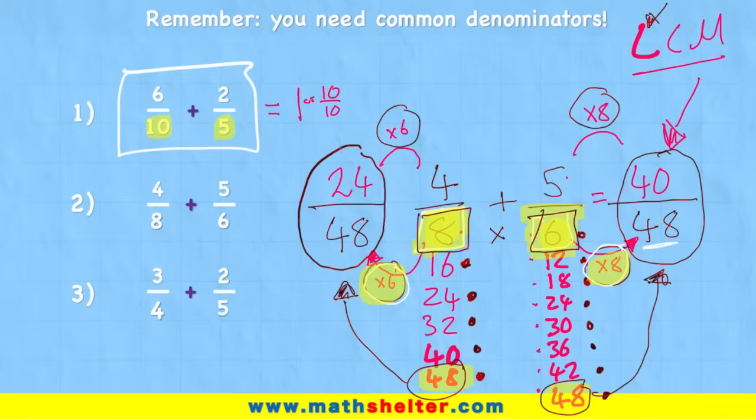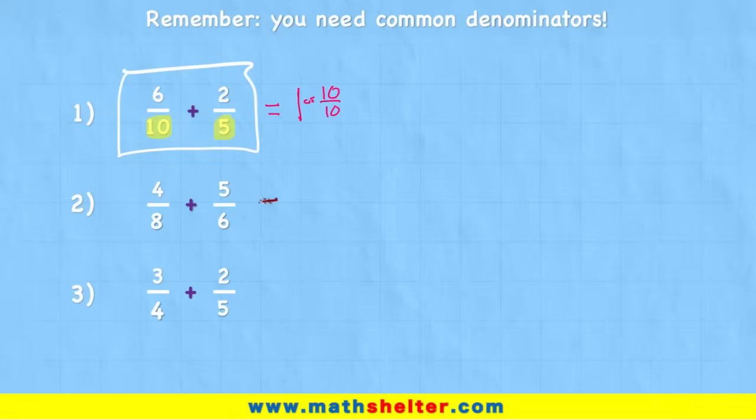But for now, I have 24/48 added to 40/48. And if we remember, I keep the denominator the same because I'm adding denominators 48. I'm adding 48 together, just like if I was adding apples together, I would still end up with an answer of something apples. And in this case, I have 24 plus my 40. So I have 64/48. So my answer is 64/48.